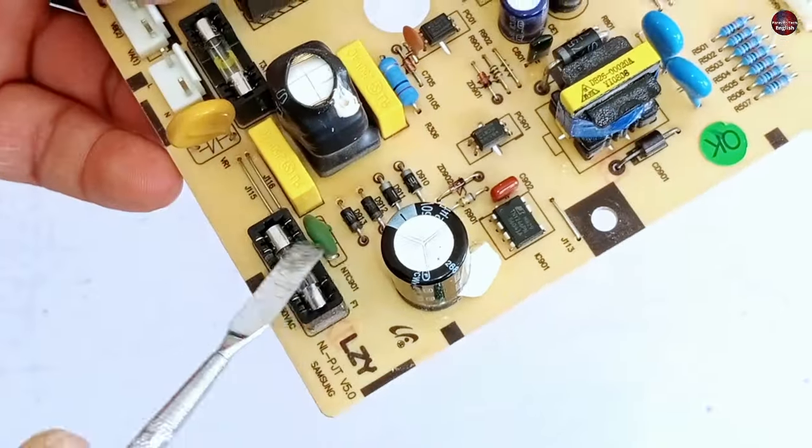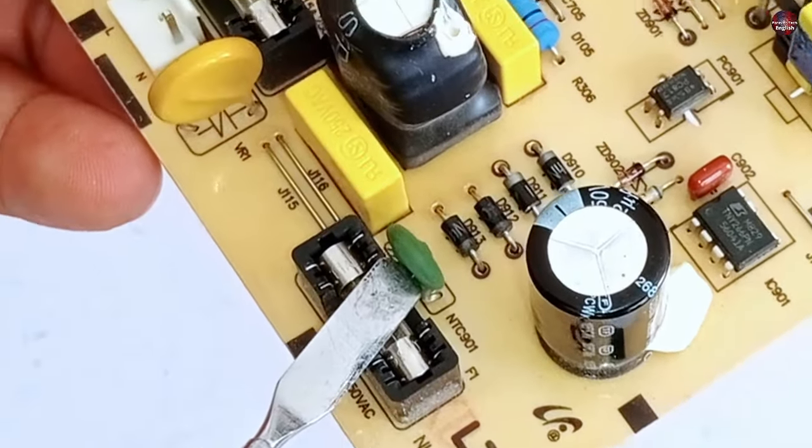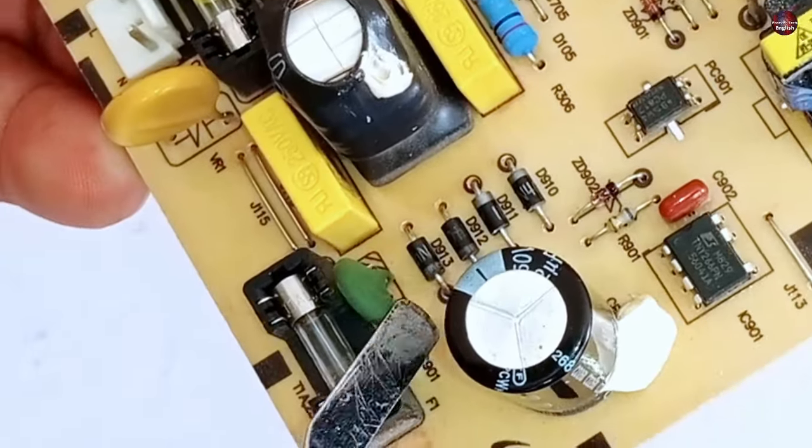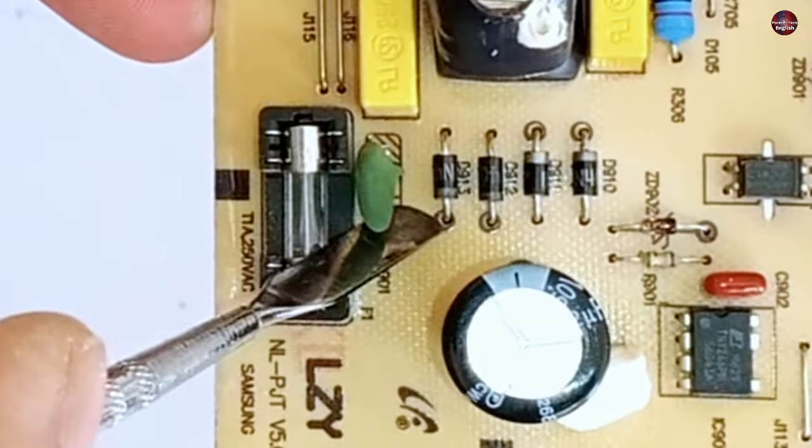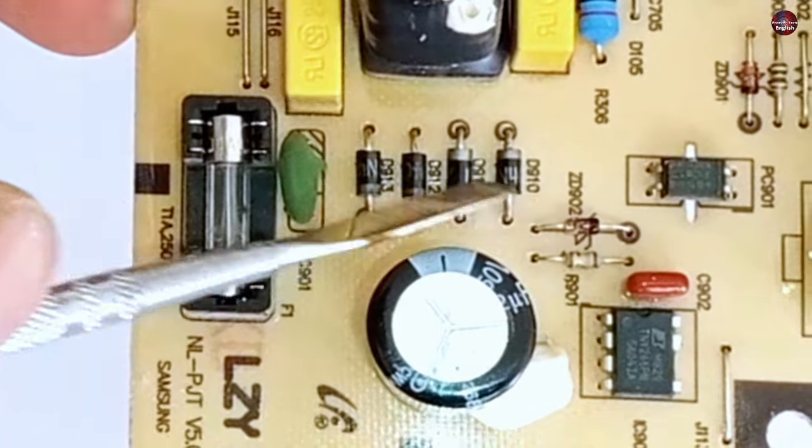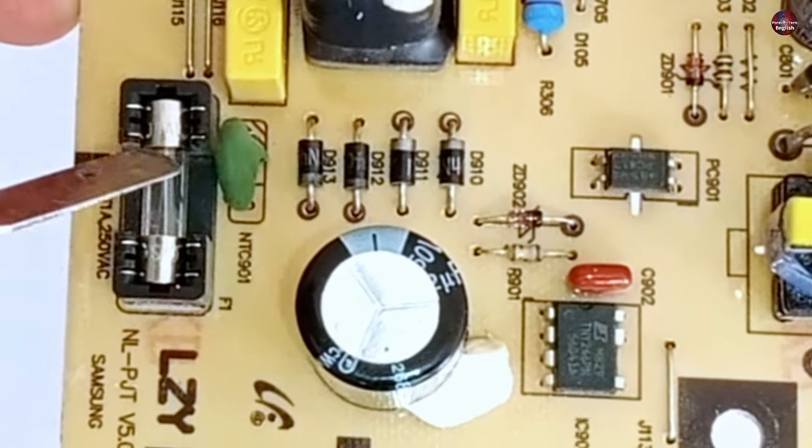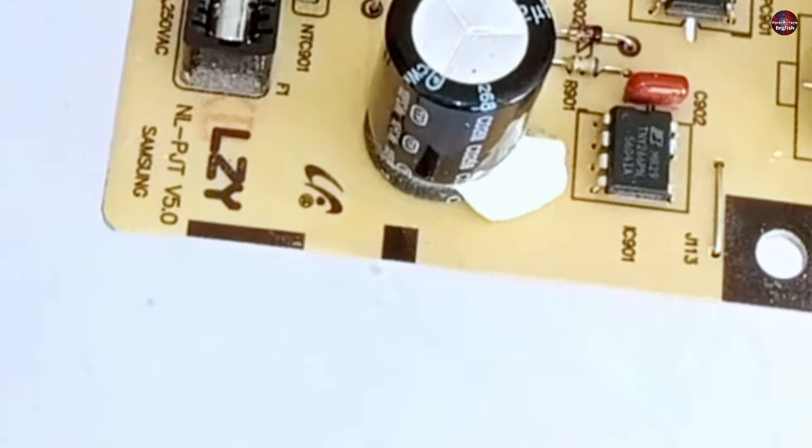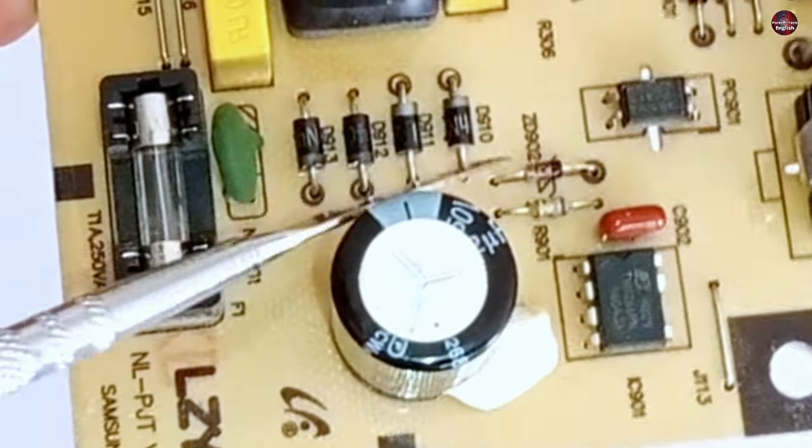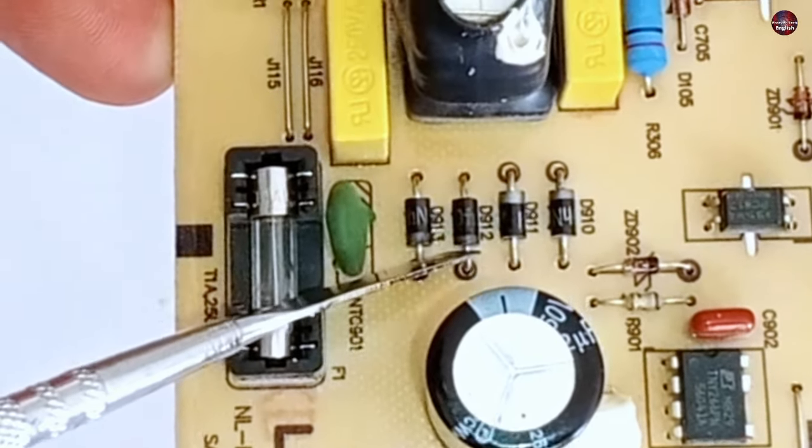When the electricity passes from the PTC sensor, it directly moves to these rectification diodes. If these go bad, the SMPS circuit will not work. Mostly, any two diodes between these four rectification diodes go bad. You can check these diodes with a multimeter. And after that, you can trace the fault.